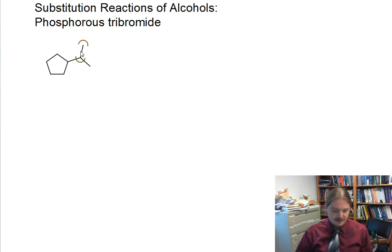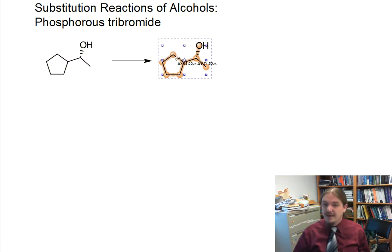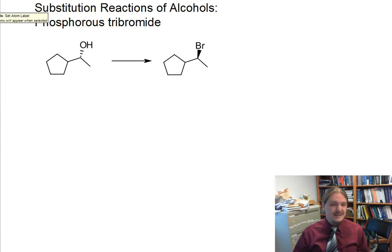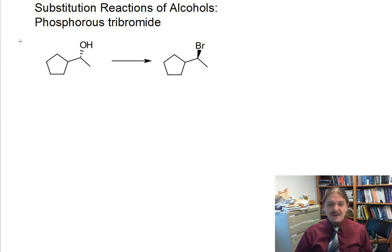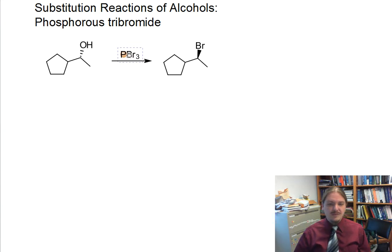Let's say that we had this alcohol and you wanted to do a reaction that converted it into the corresponding bromide, and we were looking for that to happen with inversion of stereochemistry — so we were looking for something that's SN2-like. And we need to follow our theme of avoiding carbocations, but still being able to activate the alcohol to be a better leaving group.